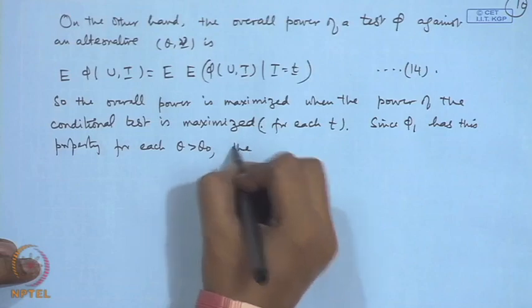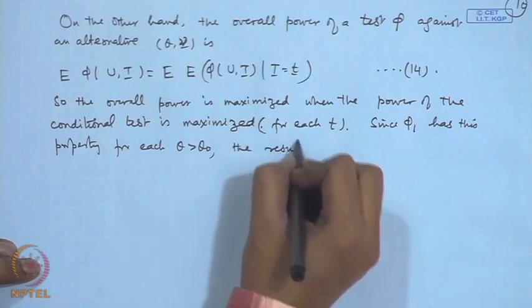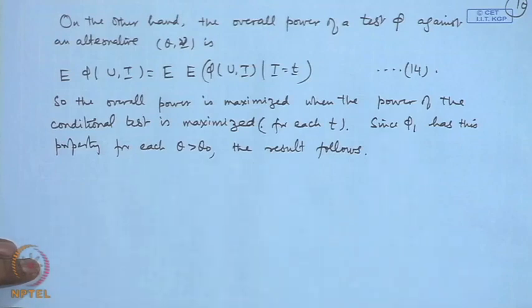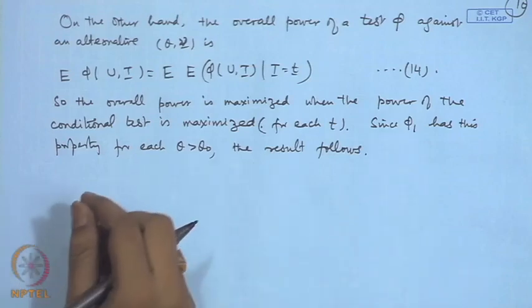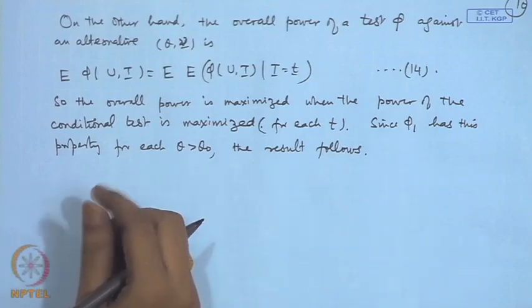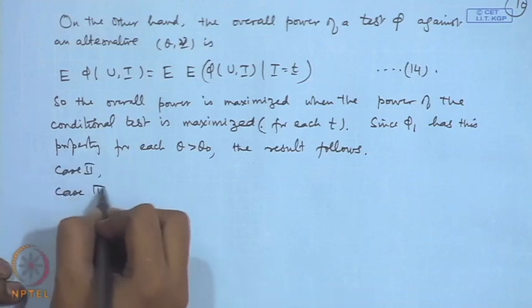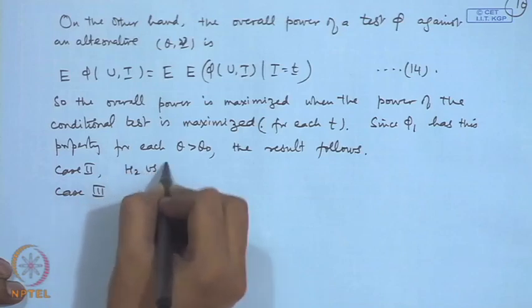Since phi 1 has this property for each theta greater than theta naught, the result follows. I am not stating the case 2 and case 3, that is h2 versus k2 and h3 versus k3.